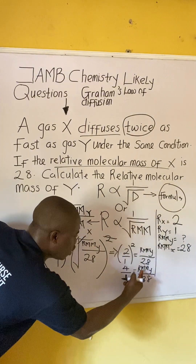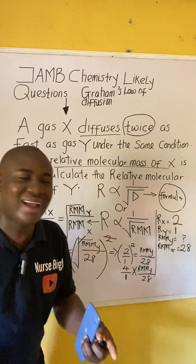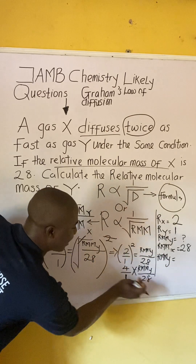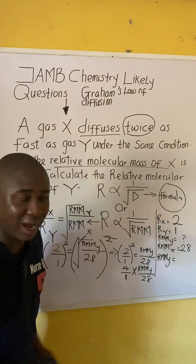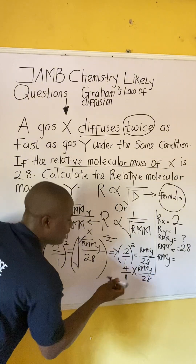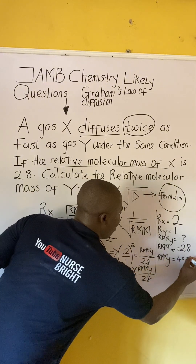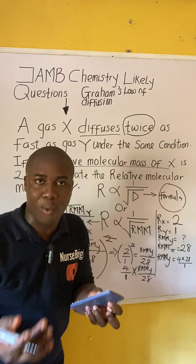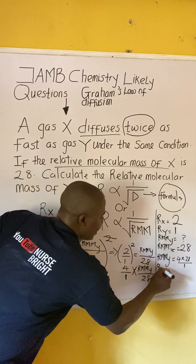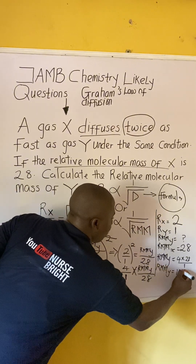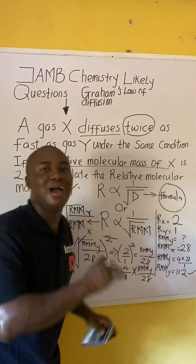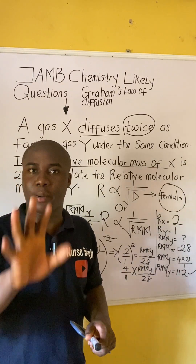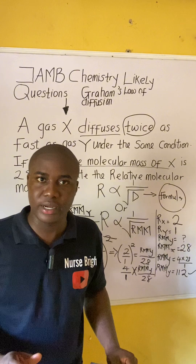Now we make RMM-Y the subject of the formula by cross-multiplying: RMM-Y equals 4 times 28 divided by 1. That gives us 112. Therefore, the relative molecular mass of gas Y is 112. This is the answer to this question.